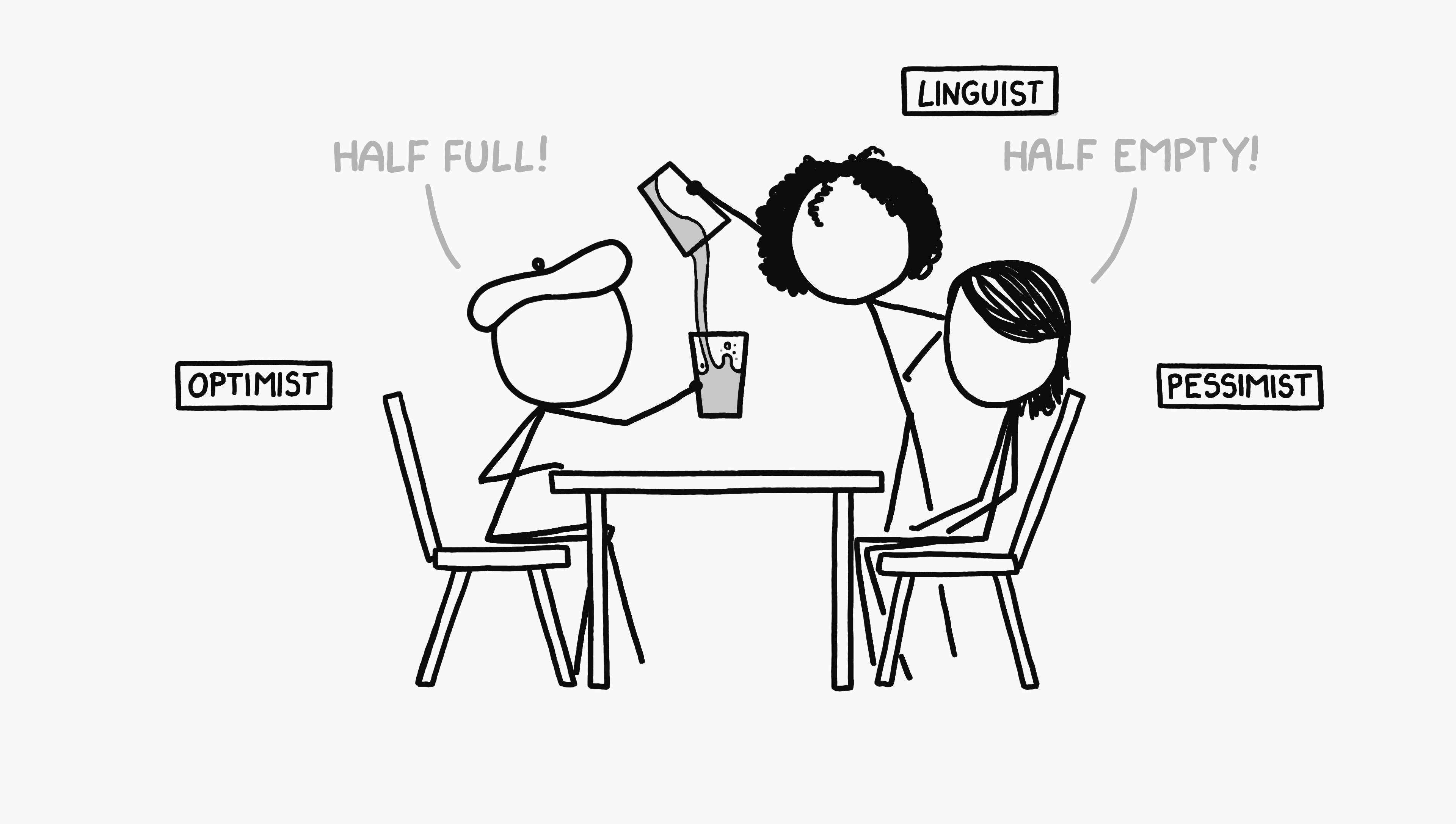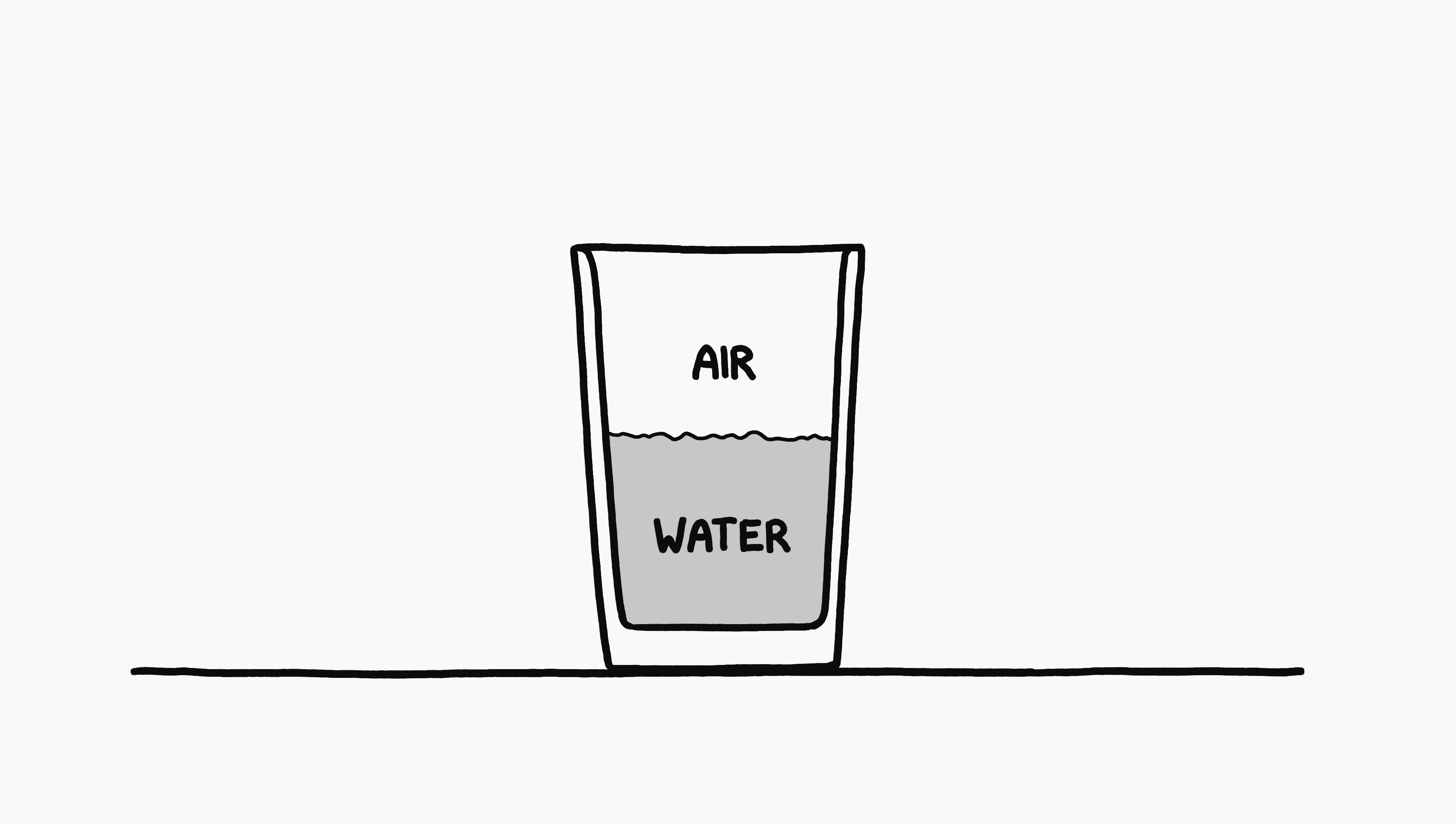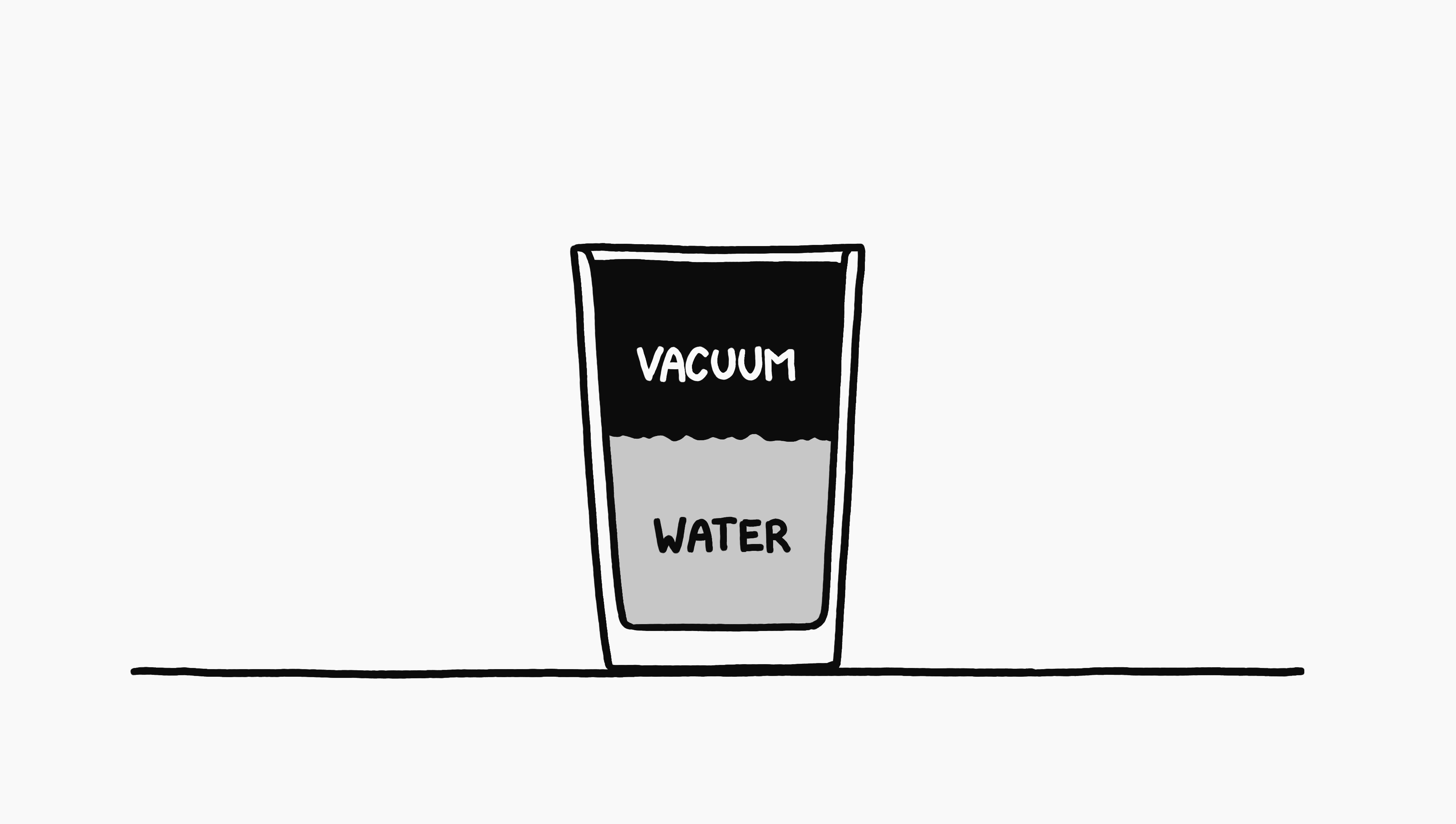Linguist Gretchen McCulloch points out that we choose which reference state dimension as a way to officially indicate whether the glass is currently being filled or emptied. Language is cool. But what if the empty half of the glass were actually empty? A vacuum.